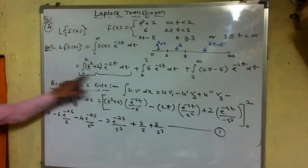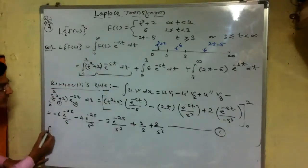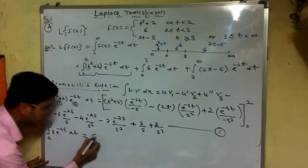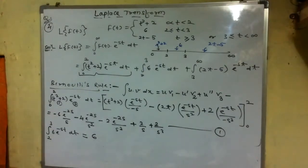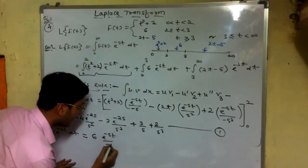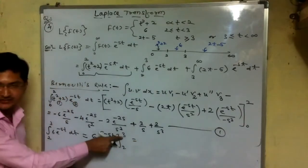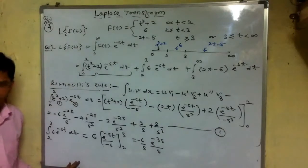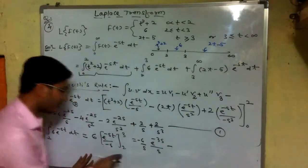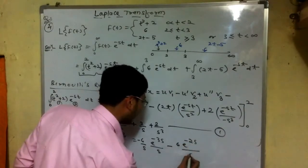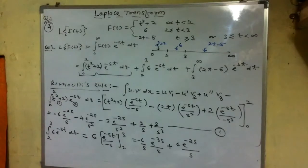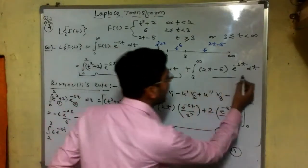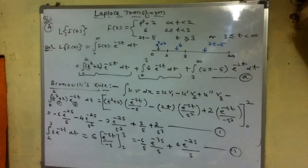For the second integration — integral of 6 e to the power minus st in limit 2 to 3 — we treat 6 as a constant. Integrating e to the power minus st gives e to the power minus st divided by minus s, evaluated from 2 to 3. Substituting the limits gives minus 6 divided by s times [e to the power minus 3s minus e to the power minus 2s].